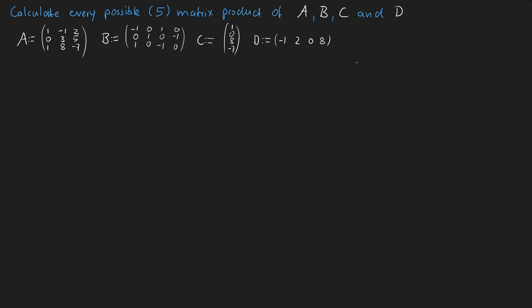In order to solve this exercise we need to know which matrices can be multiplied with each other. The rule for matrix multiplication states that the number of columns from the first matrix has to match the number of rows from the second matrix. If the matrix on the left side has dimensions m rows and n columns, then the matrix on the right side needs n rows and p columns. So we start by writing down the dimensions of our matrices.